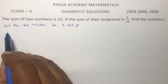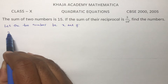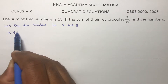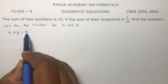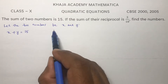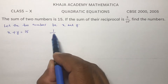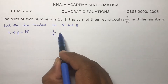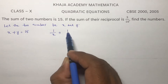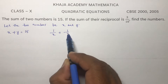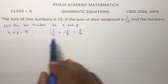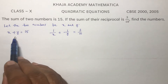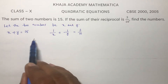Sum of two numbers: according to the given condition, x plus y is 15. And sum of the reciprocals — reciprocal of x is 1 by x, and reciprocal of y is 1 by y — equals 3 by 10. So these are the two equations.